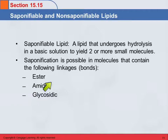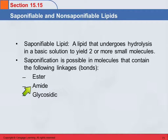An amide linkage was like an ester, but one of the oxygens was a nitrogen instead. The glycosidic linkage is what we saw between two saccharides — two monosaccharides — and so those are saponifiable as well.